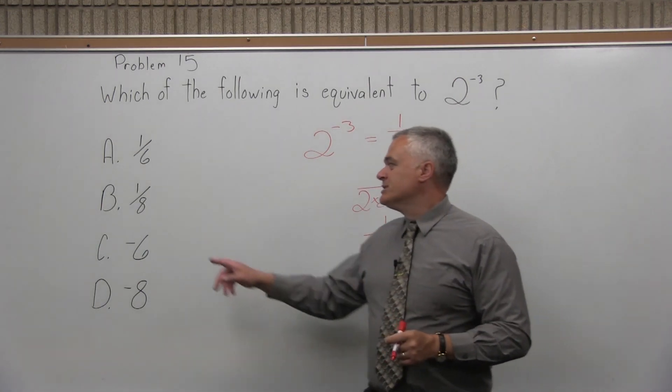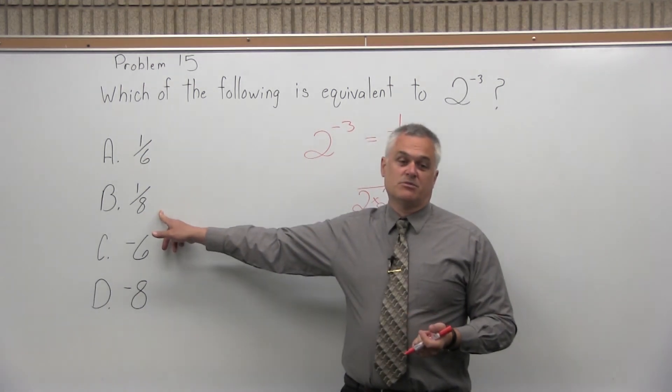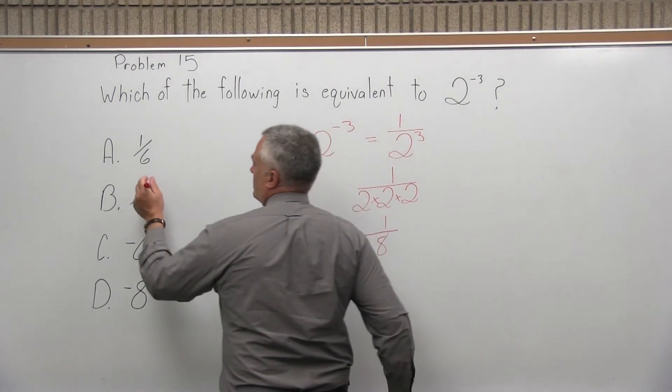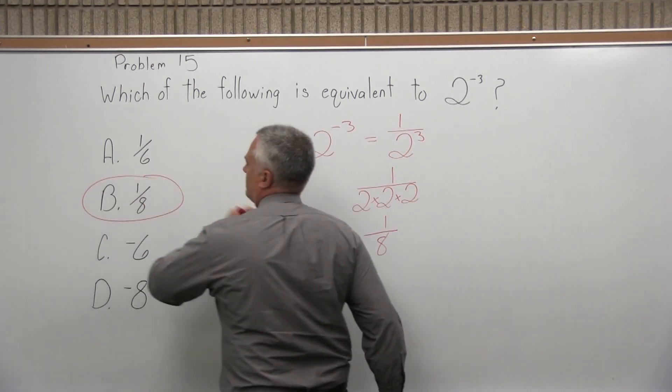And if we look at our available options, 1 over 8 is one of the options, Option B. So the answer to Problem 15 is Option B.